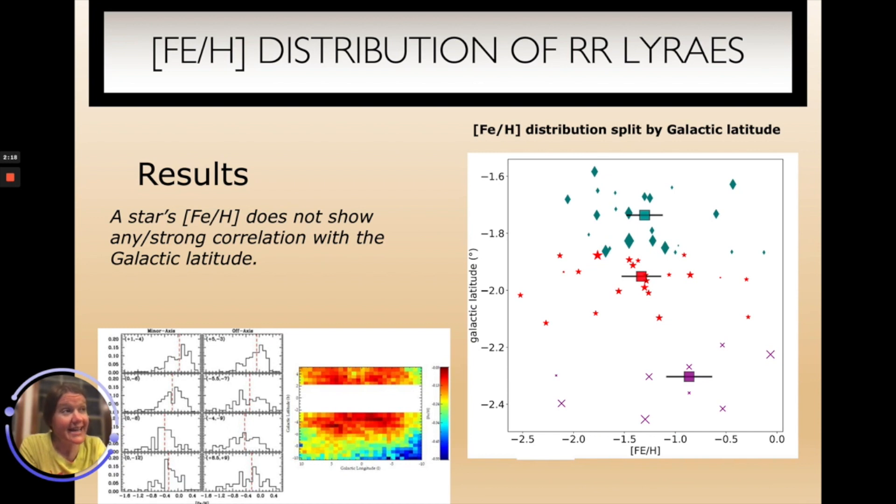If we look just at our new sample of RR Lyrae stars, those closest to the plane of the galaxy and also those with the higher signal-to-noise ratios, we find a similar trend that there is no correlation between a star's location in galactic latitude and the average metallicity.